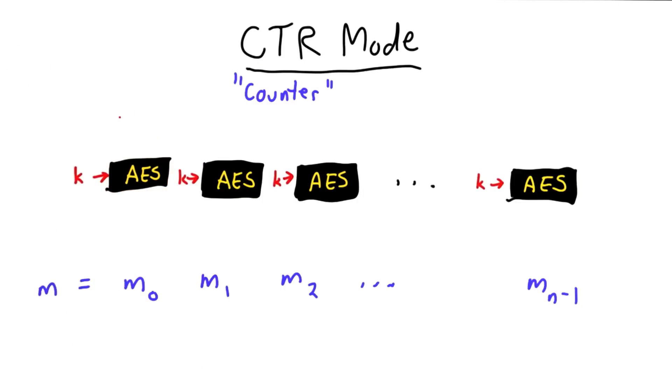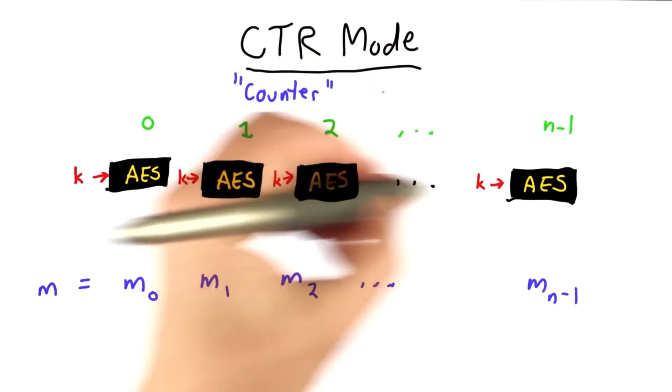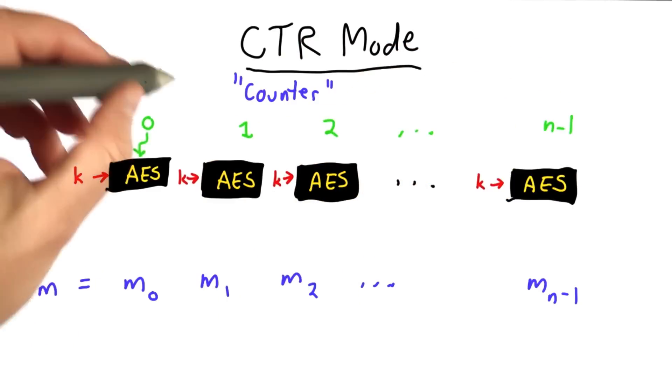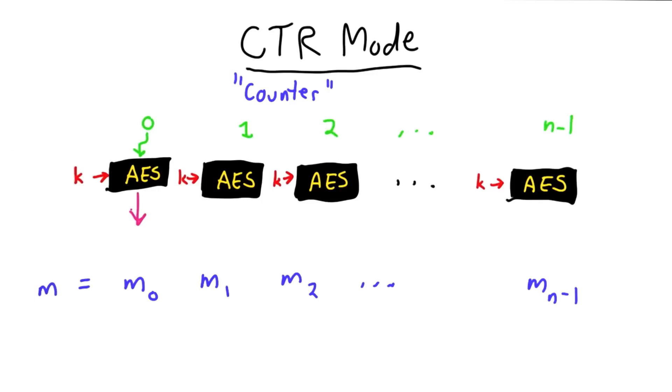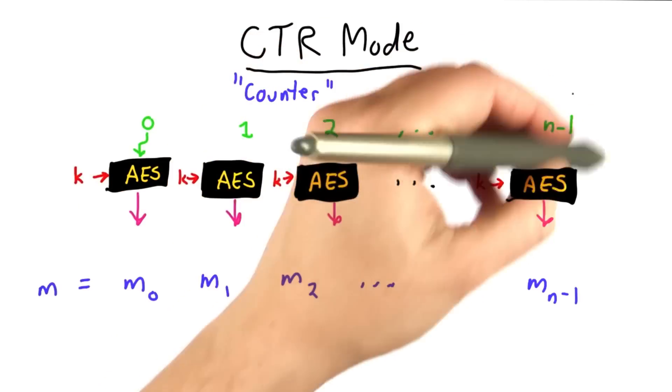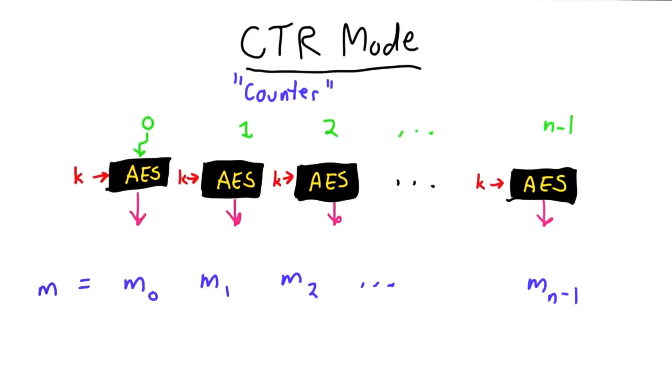But instead of just having a message block go in, what we're going to do instead is have a counter, some value that cycles through the natural numbers. That's going to be our input message, so we'll get out of that some ciphertext. So far none of this has anything to do with the message. We've just encrypted the counting values from 0 to n-1.